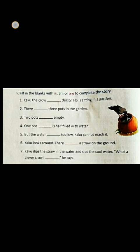Is, am, are — these helping verbs are used in the present form of sentences. We use 'am' with 'I'. When we talk about one person or thing, we use 'is'. We use 'are' with 'you' or when we talk about more than one person or thing.